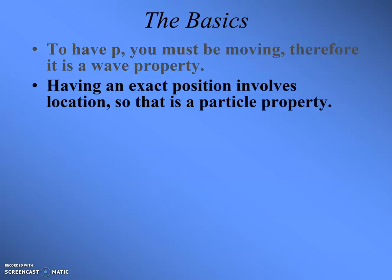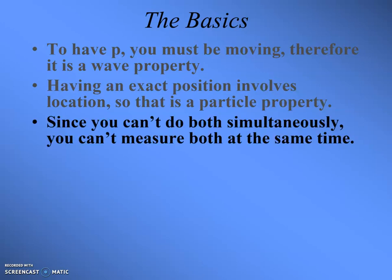On the other hand, if you have position, you're not moving, therefore you are not a wave — you are acting like a particle. So moving and having momentum is a wave type thing, while having location and not moving is a particle type thing. You can't do both simultaneously, therefore you can't measure both at the same time. You can't be moving and not moving at the same time.